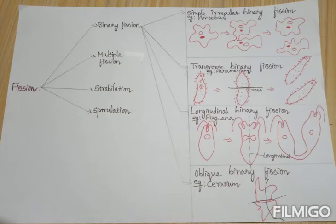In simple irregular binary fission, first the division of nucleus takes place — that is karyokinesis — followed by cytokinesis, which is the division of cytoplasm. The body of the organism forms small constrictions which grow inwards, and finally the body gets separated into two halves. Example: amoeba, where karyokinesis is first and cytokinesis is second.